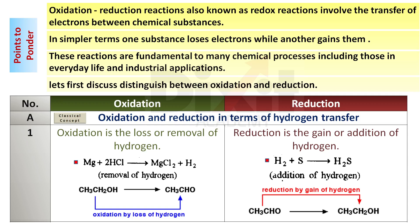Let's first discuss and distinguish between oxidation and reduction. Point number 1: According to the classical concept, in terms of hydrogen transfer, oxidation is the loss or removal of hydrogen. Example: magnesium reacts with hydrochloric acid in a single displacement reaction to produce magnesium chloride salt and hydrogen gas. In this reaction, hydrogen is removed from HCl. Hence, it is an oxidation with respect to HCl.